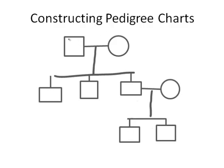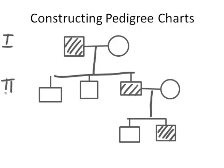If we want to display a trait, we colour in those individuals who are displaying that particular trait. We can see that some of the males are carrying it, but none of the females are. To identify individuals in the pedigree, we use Roman numerals to determine the generation: first generation for the grandparents, second generation for the three boys with one married to a woman, and the third generation with two boys.